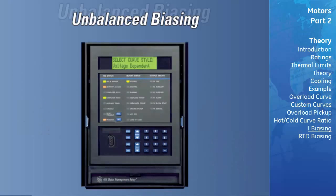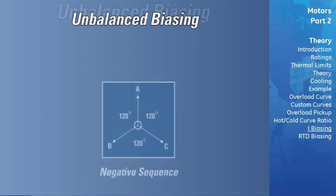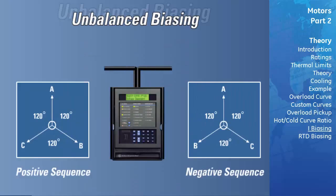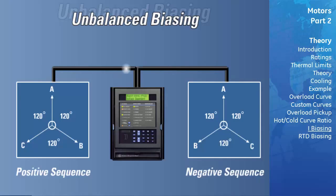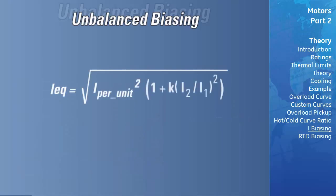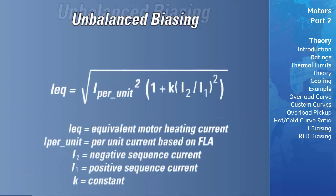The GE Multilin relay measures the ratio of negative to positive sequence current. The thermal model is biased to reflect the additional heating caused by negative sequence current when the motor is running. This biasing is done by creating an equivalent motor heating current rather than simply using average current, I per unit. This equivalent current is calculated using the equation shown.